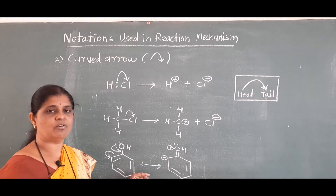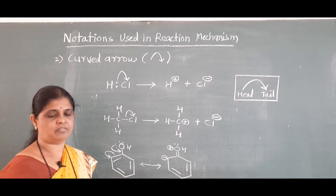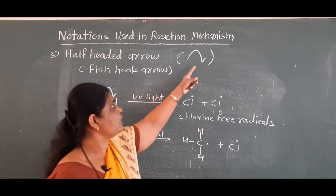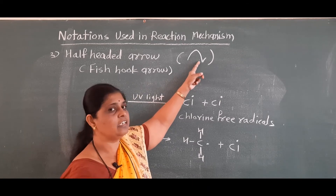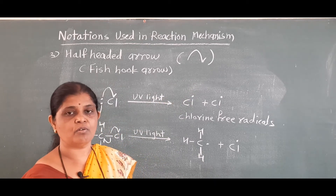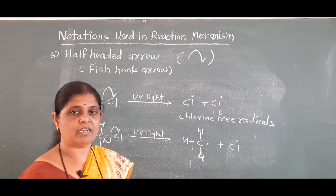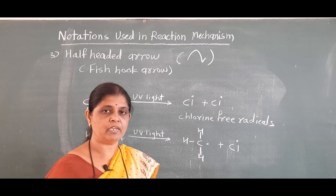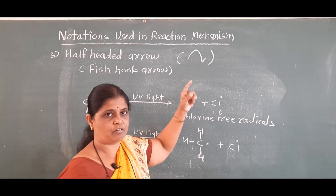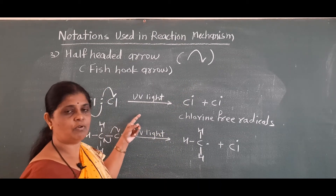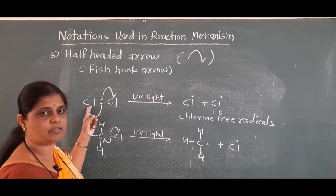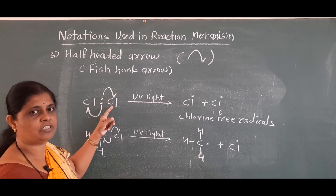The curved arrow is used to show movement of a pair of electrons. The next notation is the half-headed arrow, also known as the fish hook arrow. It looks like a fish hook, which is why it is called the fish hook arrow. This fish hook arrow is used to show movement of a single electron, unlike the curved arrow which shows movement of a pair of electrons. It is used in cases of homolytic bond fission, where the shared electron pair is equally distributed between two bonded atoms.